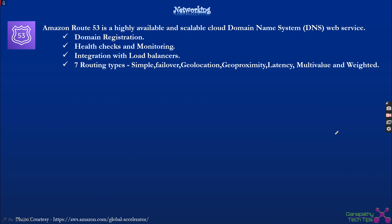Route 53 is the Domain Name Service provided by AWS — a DNS service comparable to GoDaddy. You can register your domain using AWS Route 53. It also provides health checks and monitoring. We can define routing policies such as simple, failover, geolocation, geoproximity, latency, multivalue, and weighted-based routing. For example, with weighted routing you can define a 50-50 or 60-40 split, and traffic is routed accordingly to different sets of instances.